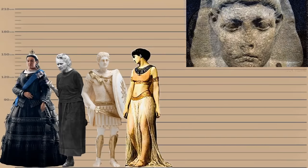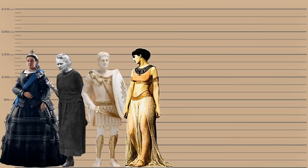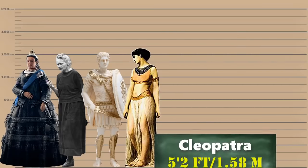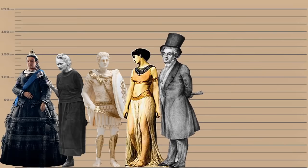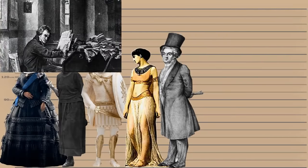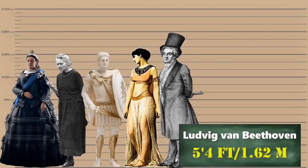Cleopatra, the last active ruler of the Ptolemaic kingdom of Egypt, scaled at 5 feet 2 inches. Then we have the German composer and pianist Ludwig van Beethoven, a crucial figure in the transition between the classical and romantic eras in classical music. His height was 5 feet 4 inches.